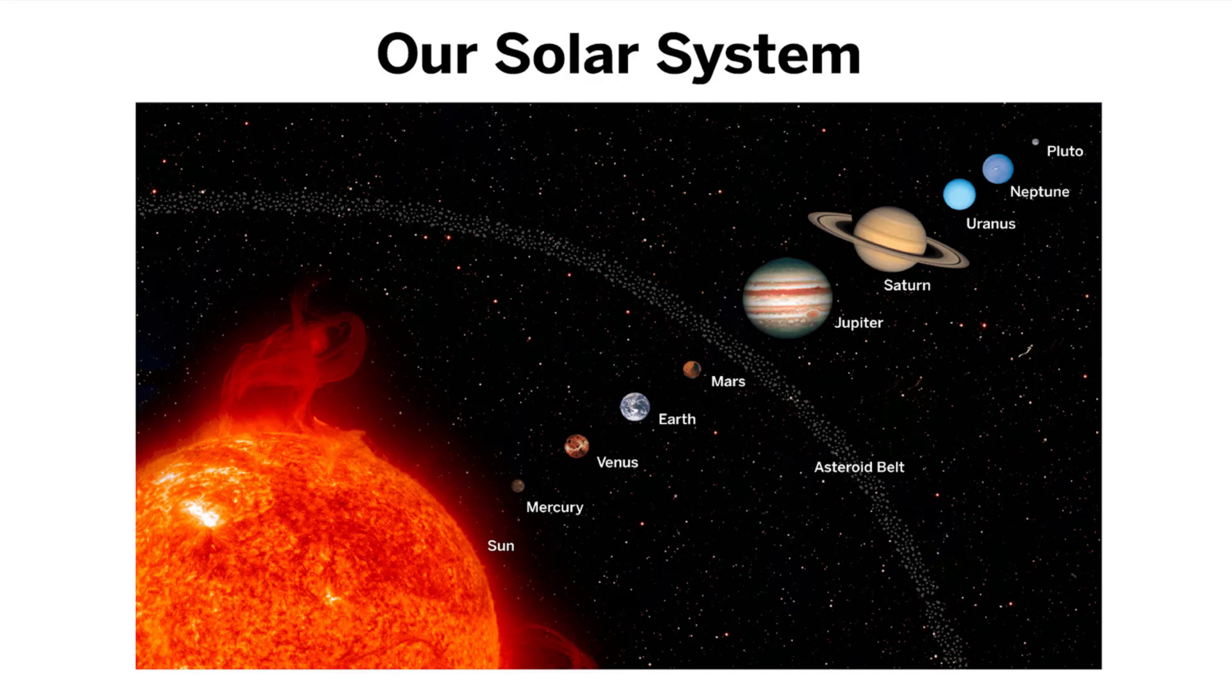Note that in this image, the planets are shown in the correct order from the sun, but the size of the planets and the distance between the planets are not to scale.